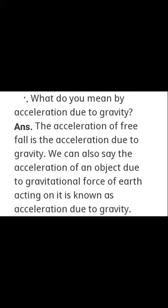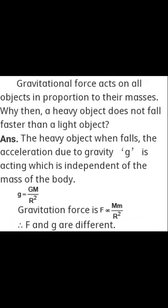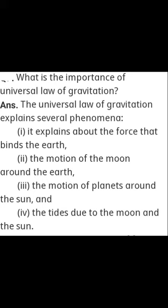What do you mean by acceleration due to gravity? The acceleration of free fall is the acceleration due to gravity. We can also say: the acceleration of an object due to the gravitational force of earth acting on it is known as acceleration due to gravity. What is the importance of the universal law of gravitation? It explains the force that binds the earth, the motion of the moon around the earth, the motion of planets around the sun, and the tides due to the moon and the sun. Ocean tides are also explained by gravitational force.